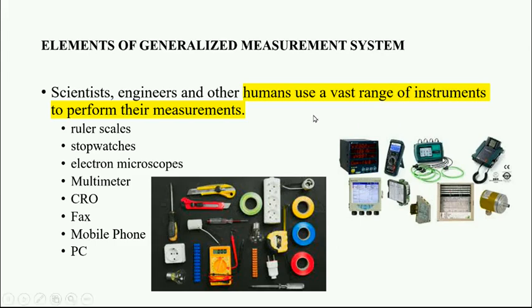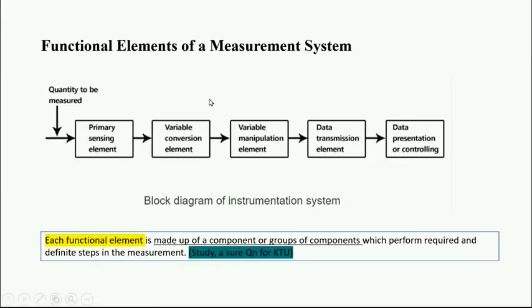What is an instrument? Instrument means it's a measurement system. Scientists, engineers, and other humans use a vast range of instruments to perform their measurements - like rulers, stopwatches, electron microscopes, multimeters, CRO, fax, mobile phones, PCs, altimeters. So a lot of equipment you are already familiarized with in the lab.